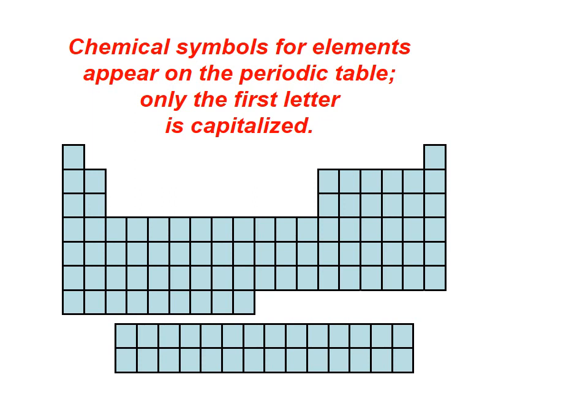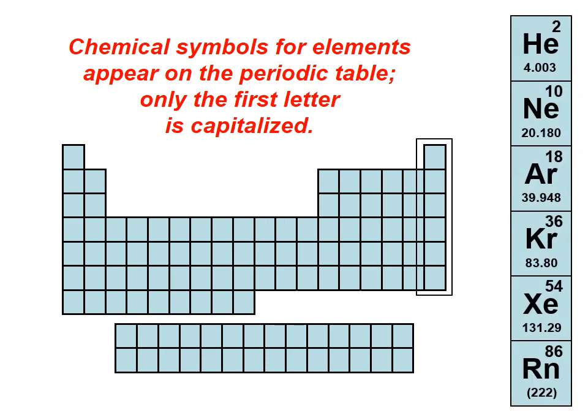The chemical symbols for the elements appear on the periodic table. Only the first letter is capitalized. If there are two letters, only the first one is capitalized. You can see here the noble gases. They all have two letters, and only the first one is capitalized.